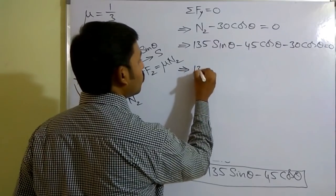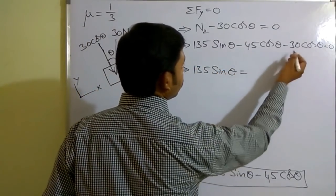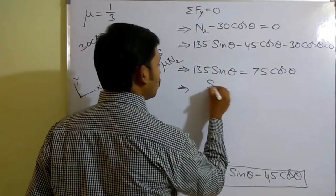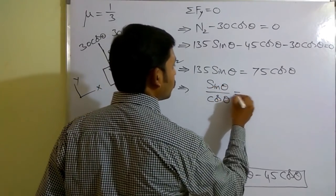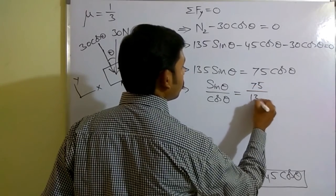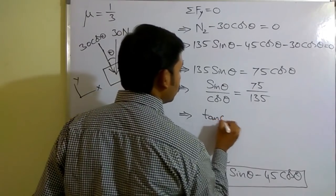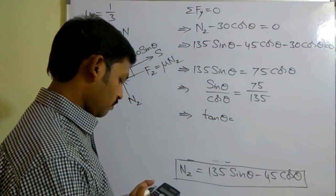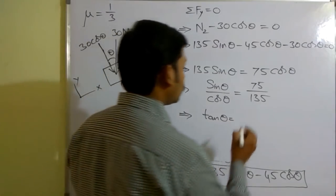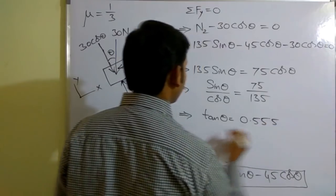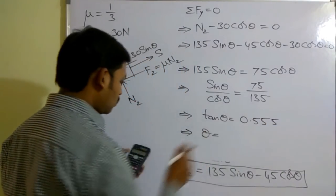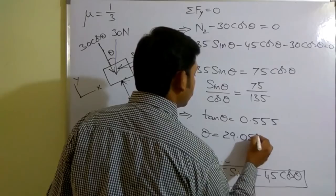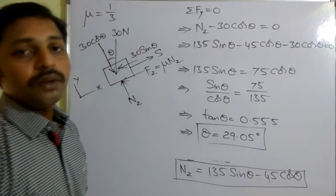From that: 135sinθ = 45cosθ + 30cosθ = 75cosθ. Therefore sinθ/cosθ = 75/135, so tanθ = 75/135 = 0.555. From this, θ = tan⁻¹(0.555) = 29.05 degrees. So this is the angle we needed to calculate.